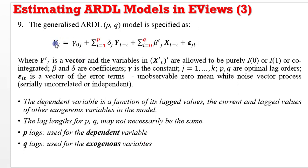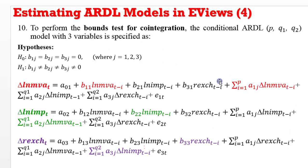The dependent variable can also be a vector. In the simplest form, each of the variables in this model can also be used as dependent variables — so Y_t can be a vector — and that would depend on your research question. I will begin with the bounds test for cointegration. In this example I have three variables: the log of MVA, the log of IMP, and the real exchange rate.